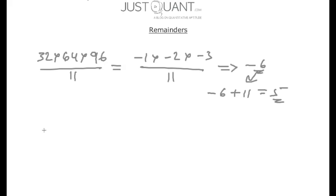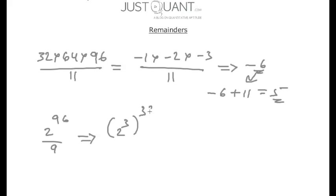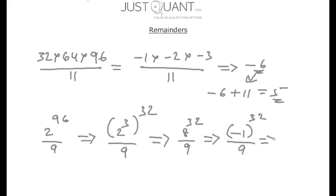Similarly, to calculate the remainder of 2 to the power of 96 when divided by 9, we write this as (2 cubed) to the power of 32, which is 8 to the power of 32, divided by 9. Now 8 divided by 9 gives a remainder of either 8 or minus 1. Taking minus 1, we get minus 1 to the power of 32, which equals 1. So the remainder is 1. If we had taken 8 as the remainder, the solution would be very tedious — using minus 1 makes it much simpler.